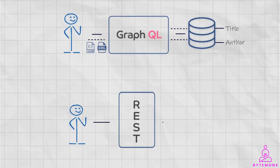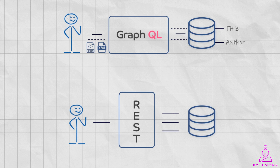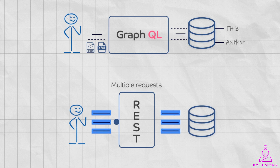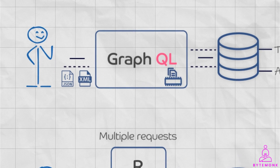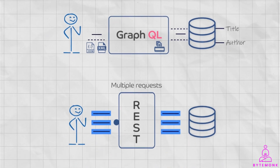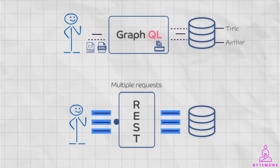GraphQL is more flexible and efficient because it doesn't require structuring your resources to get data in fewer calls. In REST, the API exposes a set of resources, each with its own structure and endpoints, and to get data from multiple resources you need to make multiple requests to different endpoints — which can be inefficient, especially if the resources are tightly coupled. In GraphQL, you can request any available data from the server in a single request, define the structure of the response, and GraphQL servers can also cache query results, reducing roundtrips between client and server.